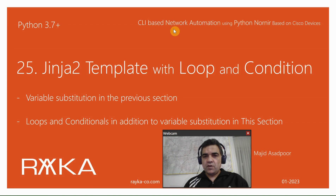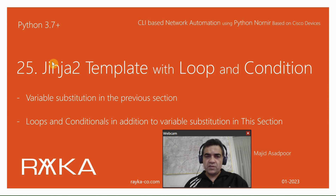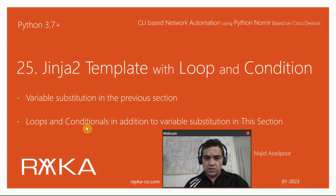Welcome to another video of CLI-based NetLog Automation using Python Nornir based on Cisco devices. In the previous section, we demonstrated a Nornir automation script with a Jinja2 template with variable substitution capability. In this section, we will use a new Jinja2 template with loops and conditionals in addition to variable substitution. It's recommended that you review the previous section before continuing this video.